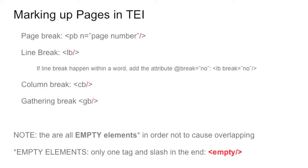All of them are empty elements, meaning that when you use them, you have only one of them — you don't have two tags opening and closing, and you have a slash immediately after the element name. For the page break, you can also provide a page number, and that is done via an attribute N that you can use within your PB.